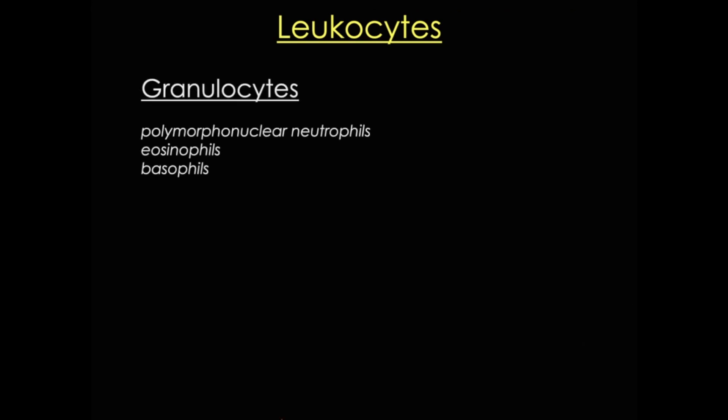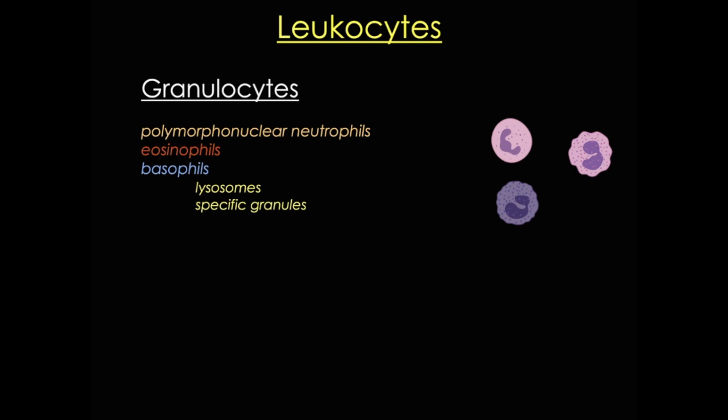Leukocytes are divided into two groups. Granulocytes possess two major types of cytoplasmic granules: primary granules, which are also sometimes called azurophilic granules, and specific granules that bind neutral, acidic, or basic stains. Granulocytes also have polymorphic nuclei, meaning they have two or more distinct nuclear lobes, though sometimes they almost look like separate nuclei. These cells are all terminally differentiated and live just a few days, and normally die of apoptosis.